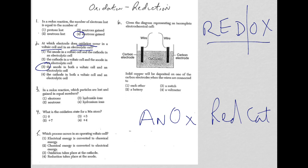So there's a couple other ones: LEO goes GER. Loss of electrons is oxidation, gain of electrons is called reduction. And then ANOX REDCAT: anode—oxidation occurs at the anode, reduction occurs at the cathode.